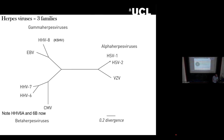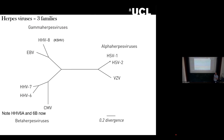I use this slide for our undergraduates to show that there are actually nine herpes viruses that infect humans. Classically, people always said there are eight — hence the designation HHV one, two, three, four, five, six, seven, eight.